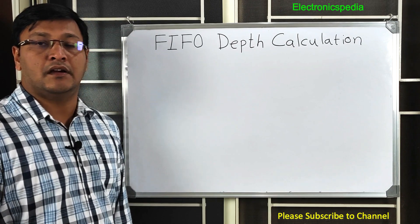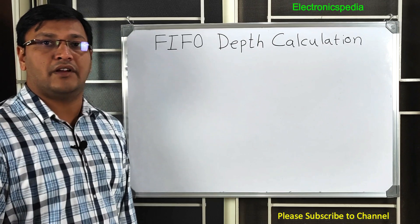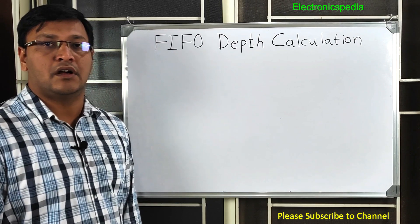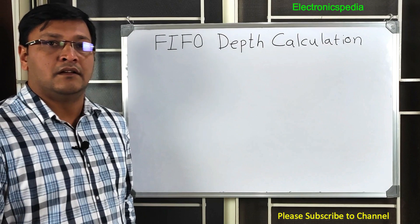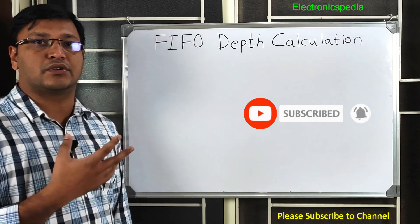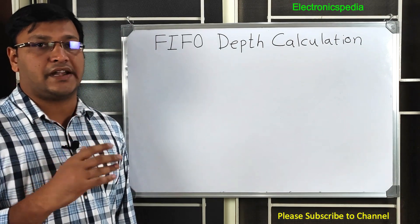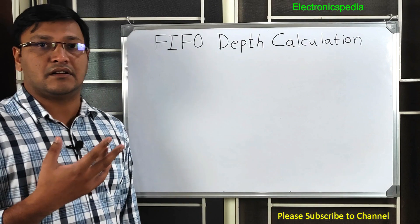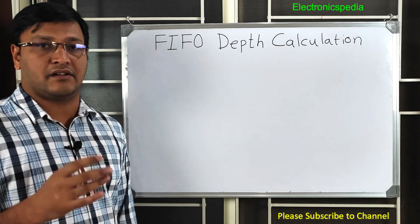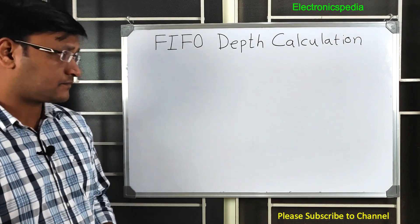Welcome back to my electronics channel. Today I'm going to explain FIFO depth calculation. In a previous video I explained FIFO basics — please check the link in the description. Quickly: a FIFO is a storage element that stores data you are writing. You need a FIFO when there is a difference in frequencies between the write and read domains, or when write and read happen at different data rate intervals.